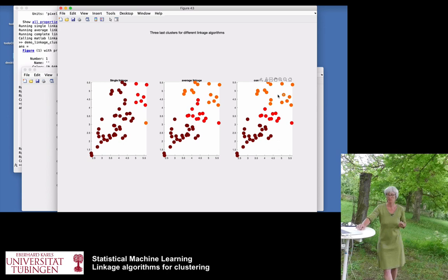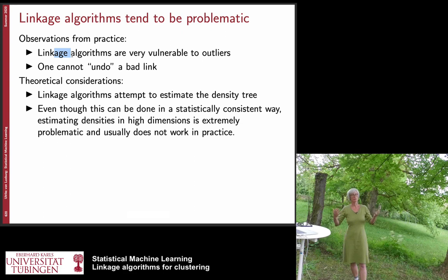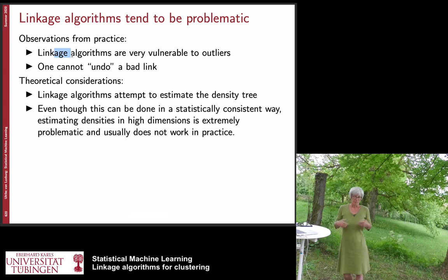There are observations from practice that we could already see in our demo. The linkage algorithms are vulnerable to outliers, and in particular single linkage. What is always problematic about these algorithms is that they are a kind of heuristic and you cannot undo a link — once you connected something, even if it later seems like the wrong choice, there is no way to undo it.